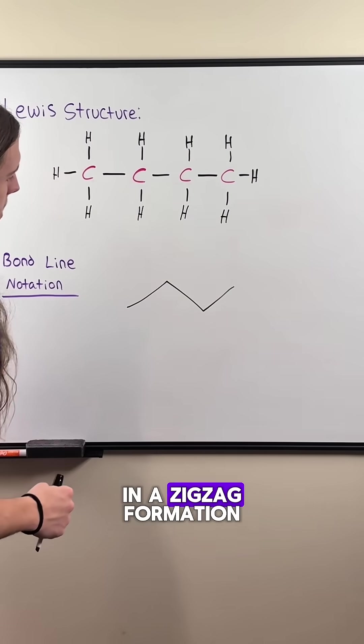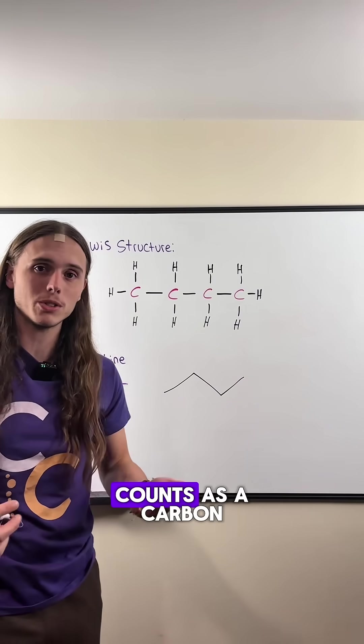We draw our bonds in a zigzag formation, and each corner and end of the structure counts as a carbon.